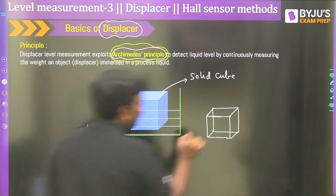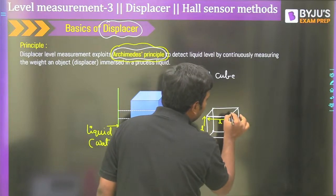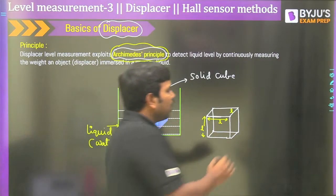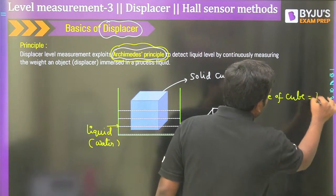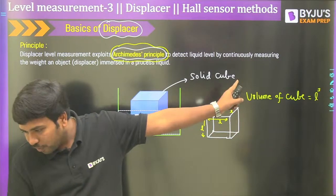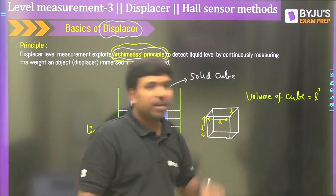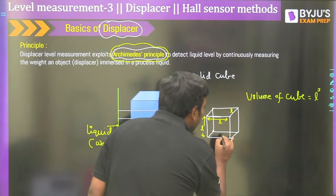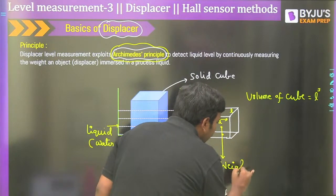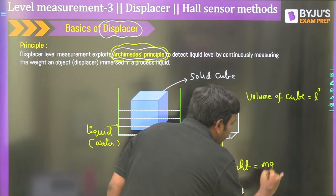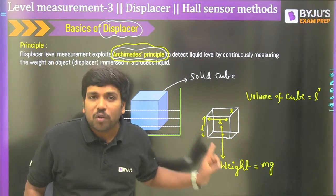Let us assume the cube is completely inside the water. The net weight can be calculated as: net weight = actual weight (Fw) minus buoyancy force (Fb). The actual weight equals the density of the cube (ρc) into the volume of the cube (Vc) into gravity (g). The buoyancy force is the weight of the water displaced because of the volume of the cube — that is, the density of the liquid (ρL) into the displaced volume into g.